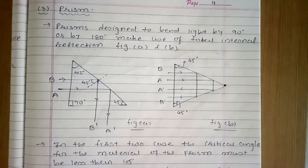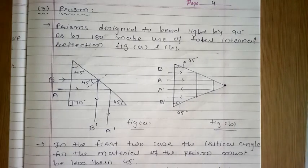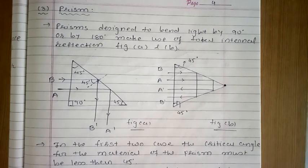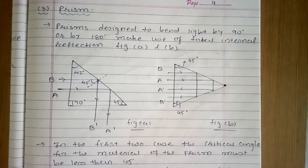We can say that prisms are designed to bend light by 90 degrees or 180 degrees to make use of total internal reflection. The critical angle for the material of the prism must be less than 45 degrees. If you want to bend light by 90 degrees or 180 degrees, you have to use a prism material having a critical angle less than 45 degrees.